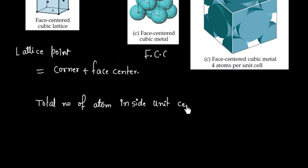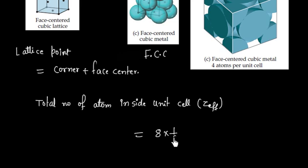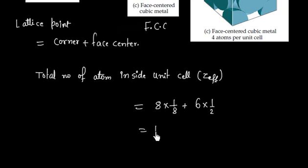So we can calculate the total number of atoms inside this unit cell, that is Z effective. We have 8 corner atoms with contribution 1/8, plus 6 face atoms with contribution 1/2. So this is 1 plus 3, giving us a total of effectively 4 atoms.